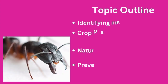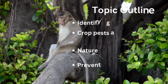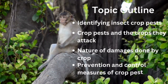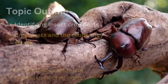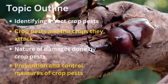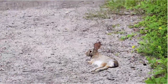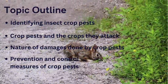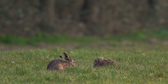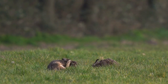The outline for today's topic will cover: how to identify crop pests, the damage crop pests do, the crops they attack, preventive measures, and how to control crop pests. We have different means of controlling crop pests: biological means, chemical means, cultural means, and mechanical means. Our major emphasis in this topic is to explain the nature of damage done by crop pests.